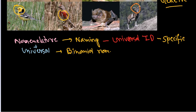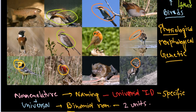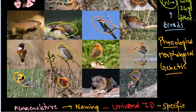Binomial nomenclature means the naming procedure has two units to name a particular organism. There are certain rules governing this, and we will discuss binomial nomenclature in detail in the future video. Please stay tuned. Thank you.